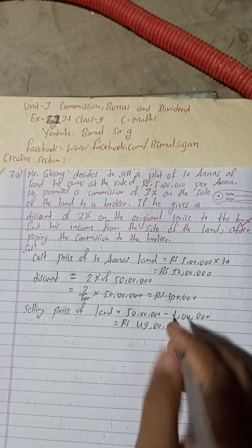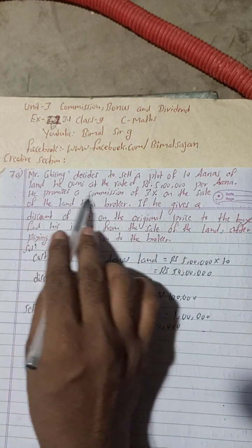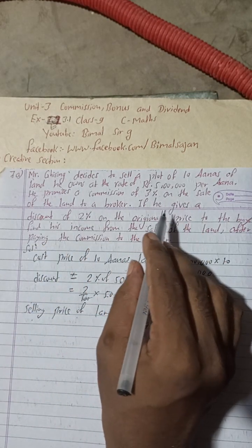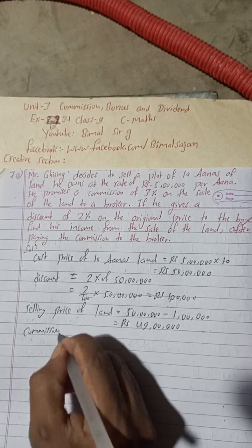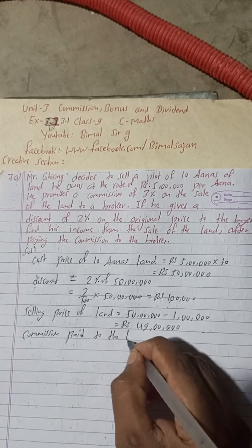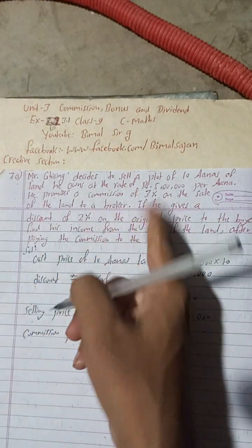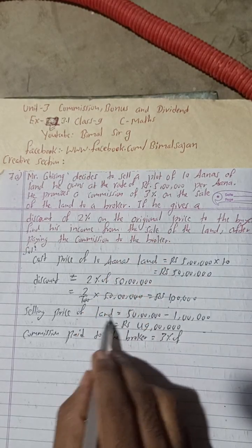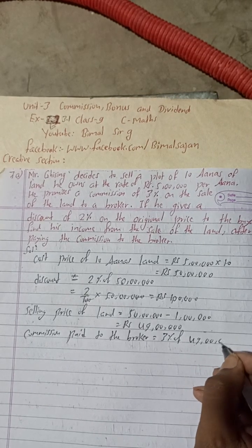Yes, now selling price of the land is 49 lakh, but he also provides how much? He promises commission of 3% on the sale of the land, okay. So 3% commission. Now commission paid to the broker, commission paid to the broker is equal to what? 3% is there, 3% commission of, 3% so 3% of this original price. This is the original price after discount, so take this, 49 lakh.